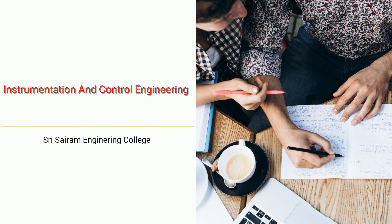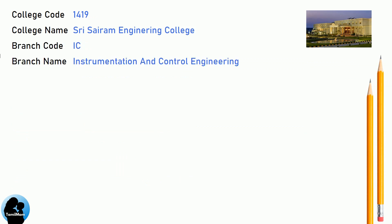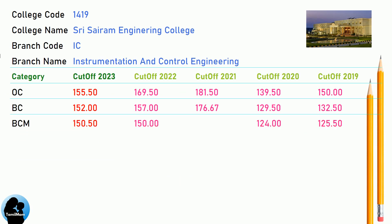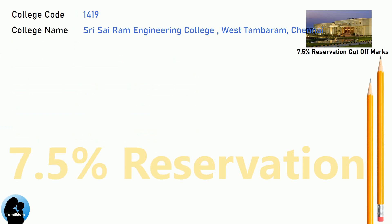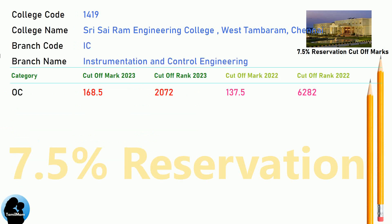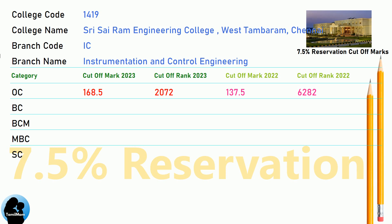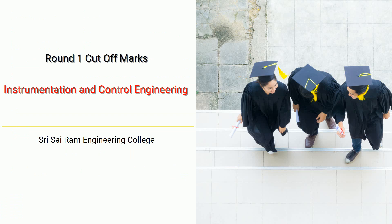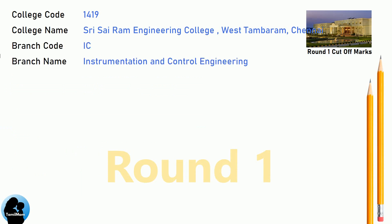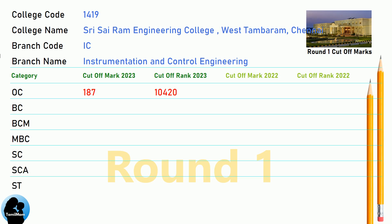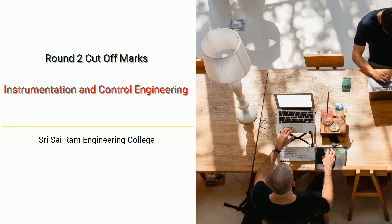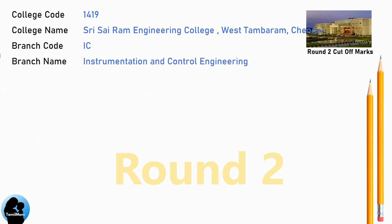DNA Cut-off for Shri Sai Ram Engineering College in Instrumentation and Control Engineering. DNA 7.5 Reservation Cut-off for Shri Sai Ram Engineering College in Instrumentation and Control Engineering. DNA Round 1 Cut-off for Shri Sai Ram Engineering College in Instrumentation and Control Engineering. DNA Round 2 Cut-off for Shri Sai Ram Engineering College in Instrumentation and Control Engineering.